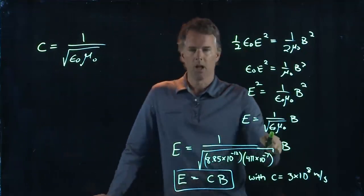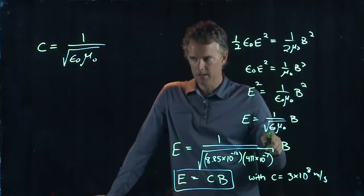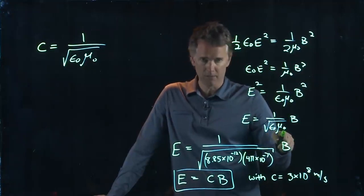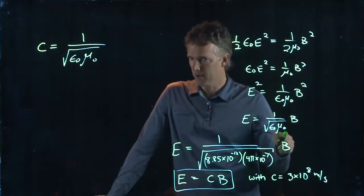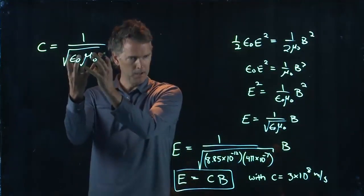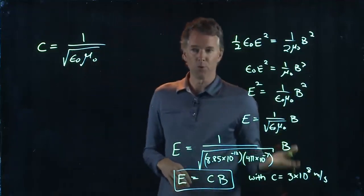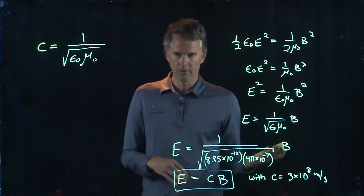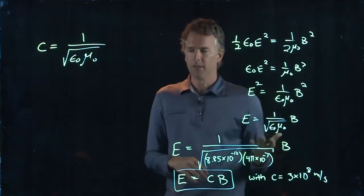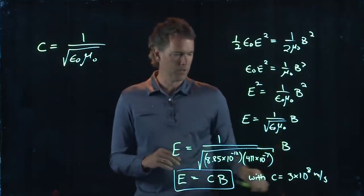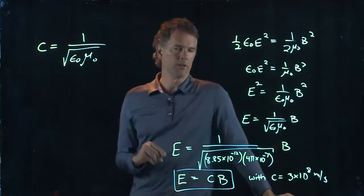You take those electric experiments that you did and you figured out what epsilon knot was. You did some magnetic experiments and you figured out what mu knot was. And suddenly you put them together in this special way and you get the speed of light. You get how fast electromagnetic waves travel across the universe.